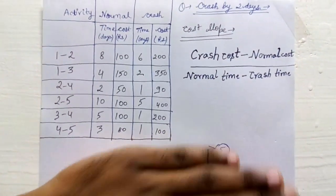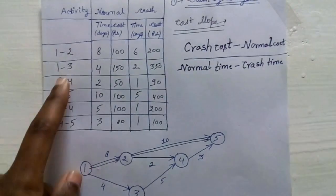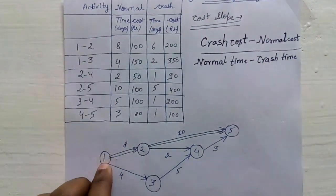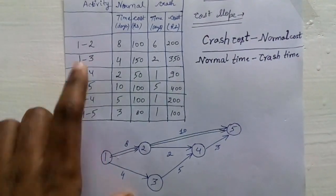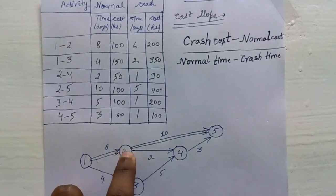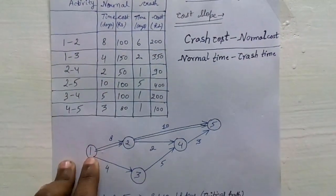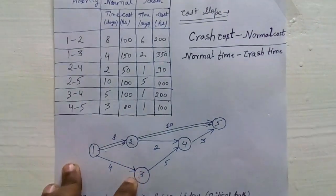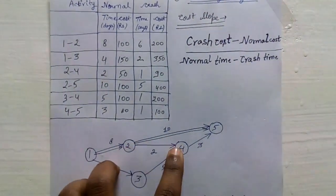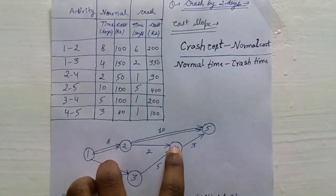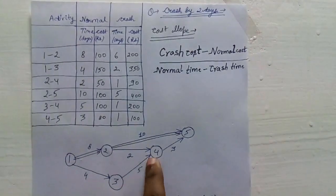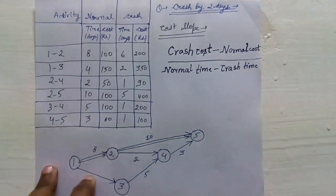To draw the diagram corresponding to these activities, begin with node 1 in a circle. From 1 to 2, put an arrow and mark node 2. From 1 to 3, put another arrow and write 3 in a circle. Then 2 to 4 — draw an arrow from 2 and write 4. Connect 4 to 5 as well. Write the corresponding normal time on each arrow — for 1 to 2 it is 8.